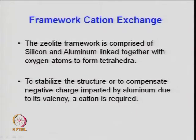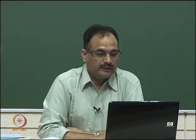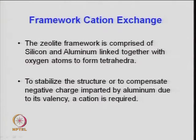The zeolite framework is comprised of silicon and aluminum linked together with oxygen atoms to form a tetrahedra — that is the first primary building unit. Silicon and aluminum are attached in tetrahedral form making one primary building block. To stabilize the structure or compensate the negative charge imparted by aluminum, a cation (such as sodium, calcium, or ammonium) is required.